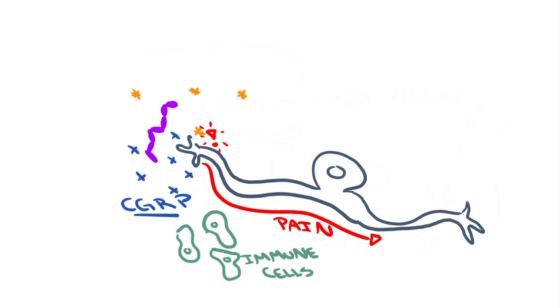But why do bacteria secrete SLS? The researchers learned that when SLS punches holes into the sensory neurons and causes the pain, the neurons send a signal in the form of a neuropeptide called CGRP. It's a signal that tells the immune system to stay away.